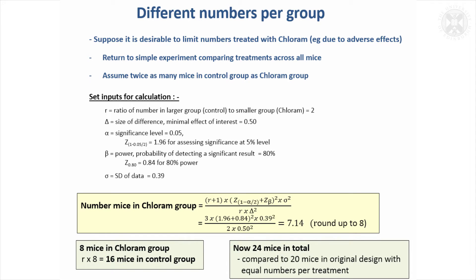So you can play with this a bit, but you can't obviously reduce the number that are going to get the active treatment too much. If you say, well, I'll have five times as many in the control group and really restrict the number in the chloram group, you would find the total number of mice would be quite a lot more to achieve that. You need to think about whether that's actually worthwhile, because you are going to be using a larger sample size overall.